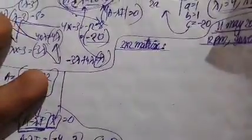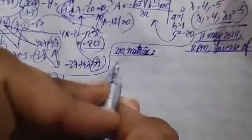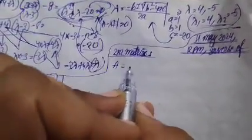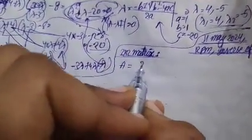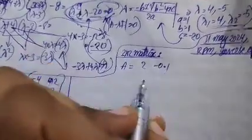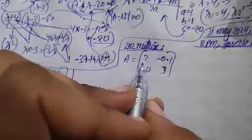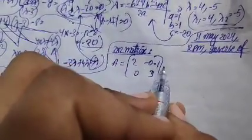This video is about finding the inverse of a 2×2 matrix. First, let us have a 2×2 matrix: 2, -0.1, 0, and 3 — 2 rows and 2 columns. We need to find A inverse. We know that A inverse is equal to the adjoint of this matrix divided by the determinant of this square matrix.